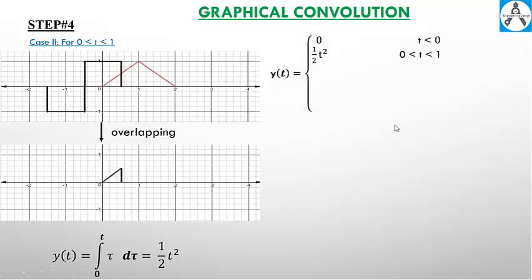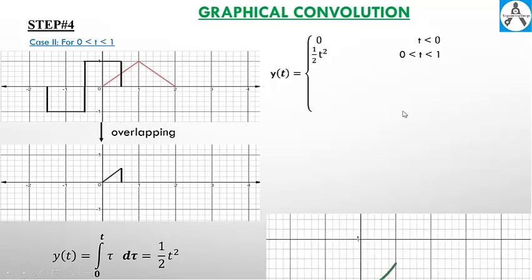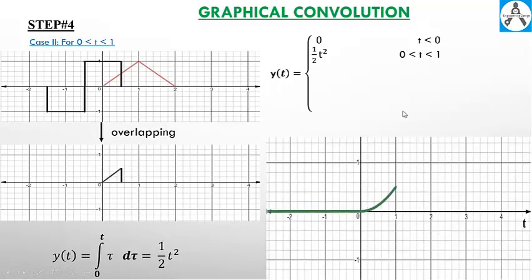So the output y of t is equal to one half t squared for time zero to one. We have a plot of it.